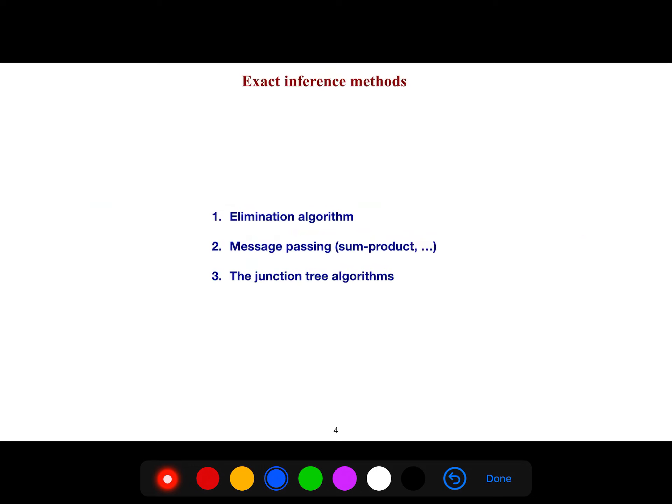For exact inference there are three simple methods. Either you go for elimination algorithm or you go for message passing such as sum product, max sum and all things, or you go for junction tree algorithm.